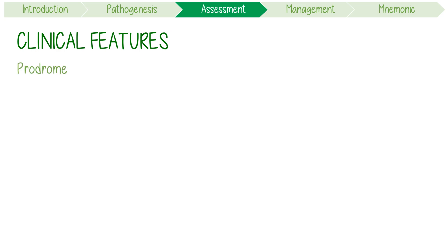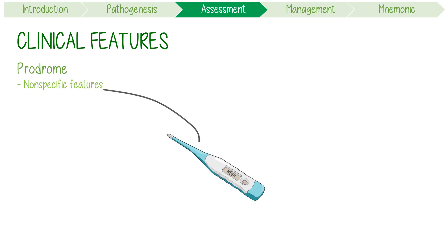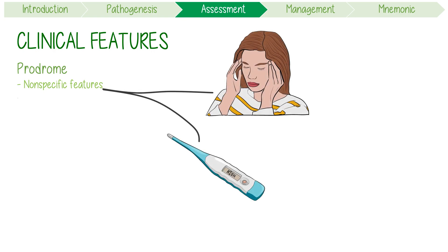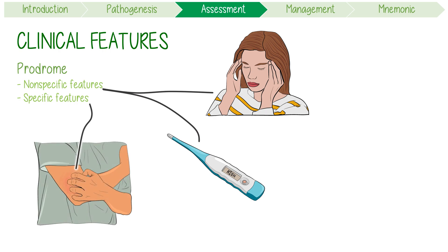The clinical features of rabies always begin with a prodrome of non-specific manifestations, including fever, malaise, and headache. The earliest specific neurological features include paresthesia and paresis around the site of exposure, even though the wound is often healed by this time.